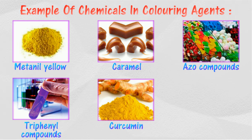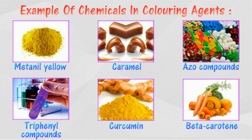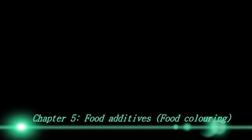Curcumin is extracted from the roots of the turmeric plant. Beta-carotene is an orange-yellow color found in plants such as carrots, tomatoes, and oranges. Thank you for taking time to watch this.